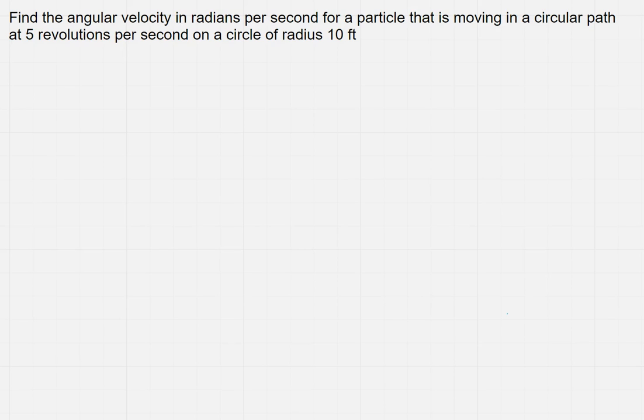So if you remember, what is the formula for angular velocity? We have this funny w, and that's going to equal alpha over t. Now remember, alpha is your angle in radians, and t is your time.